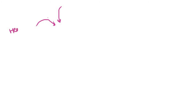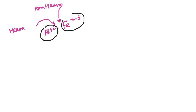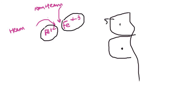Iron is taken into our system in two forms: the heme form and the non-heme form. The heme form is one in which iron is present in the Fe2+ state, and the non-heme form is one in which iron is present in the Fe3+ state. Among these, the heme form is super easy to absorb and the non-heme form takes a little longer. The first part of the small intestine — the duodenum — is the site where iron absorption takes place, and on this duodenum there are specific transporters called DMT transporters, through which absorption of both ferrous and ferric forms takes place.